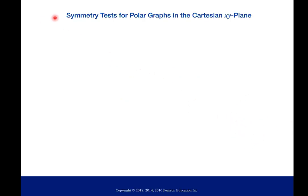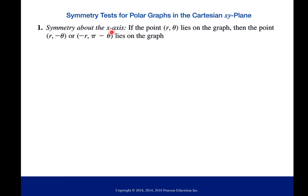So symmetry tests for polar graphs in the Cartesian xy-plane. You learned about symmetry back in algebra, but let's go through it here. The first one: your graph can be symmetric about the x-axis if the following is true. The point (r, θ) is on your graph, but then also the point (r, -θ) is on the graph. Or you can say the same thing: negative r and then π - θ.